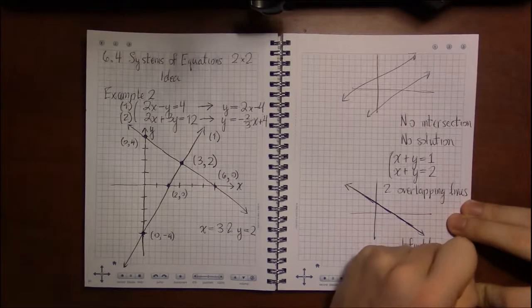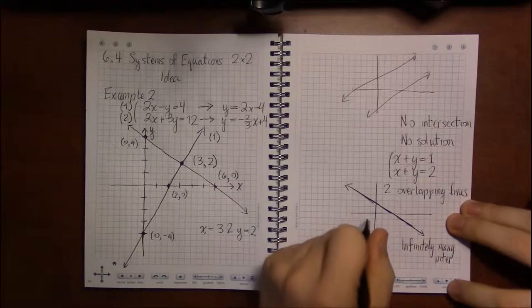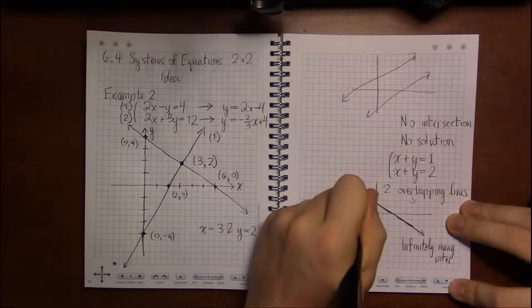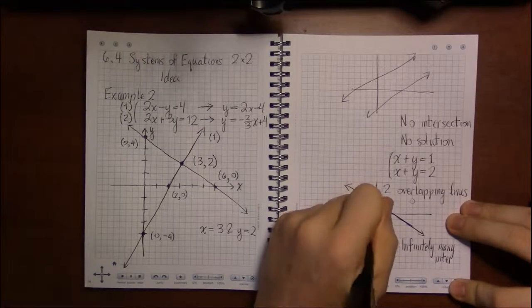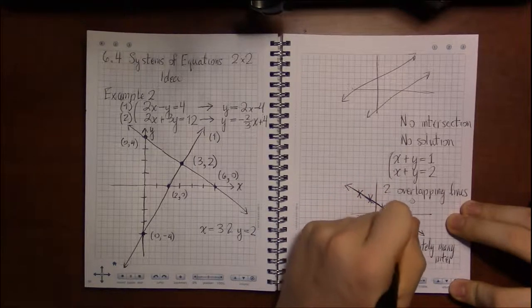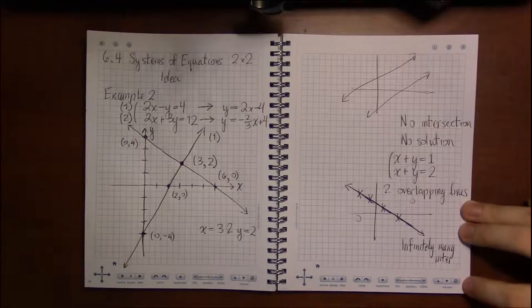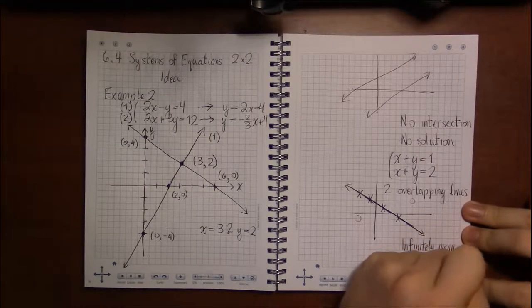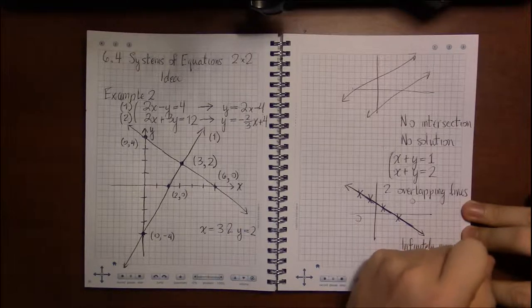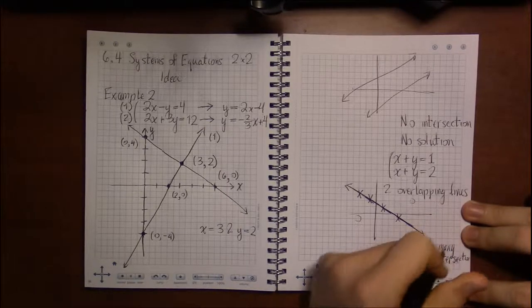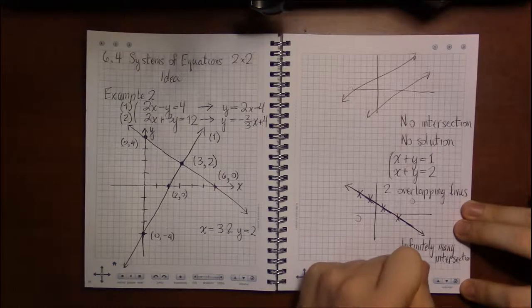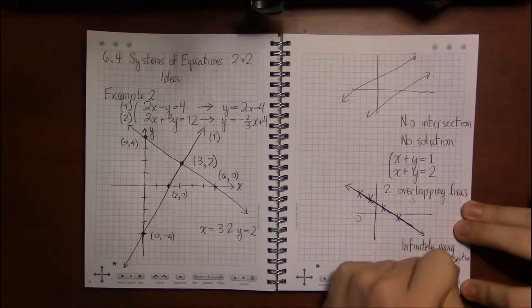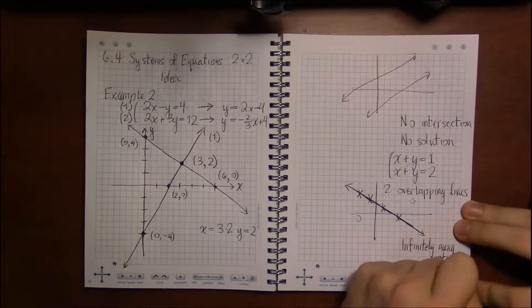It's not quite right to say that they intersect everywhere because they don't intersect here or here. They will intersect everywhere on the line, but this gets us to the point of infinitely many intersections. So that means there are infinitely many solutions.